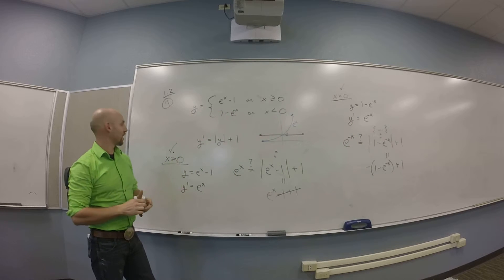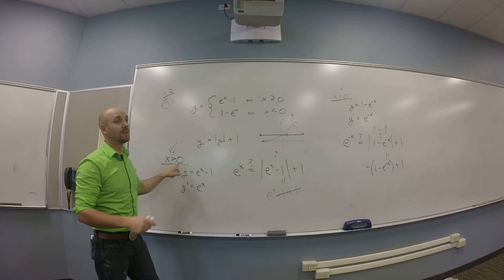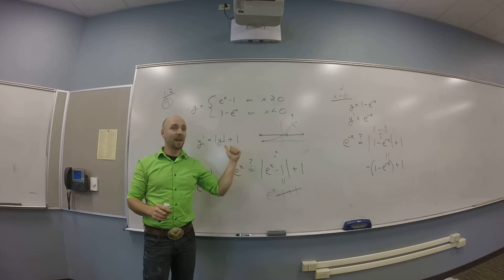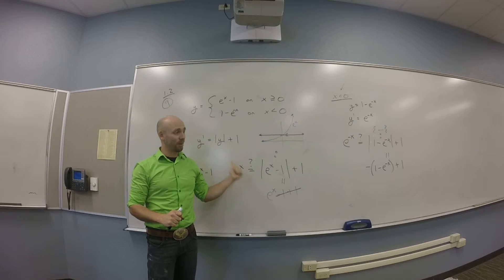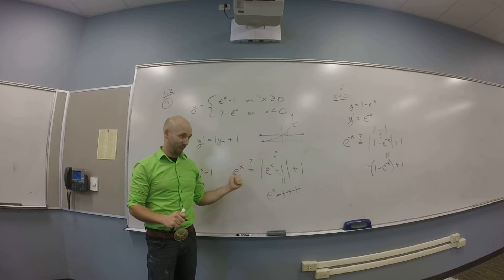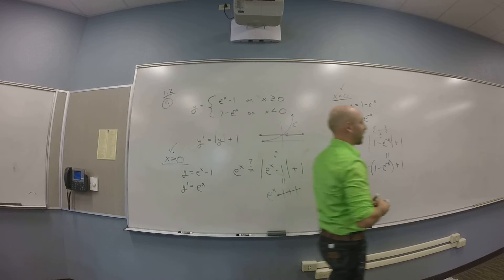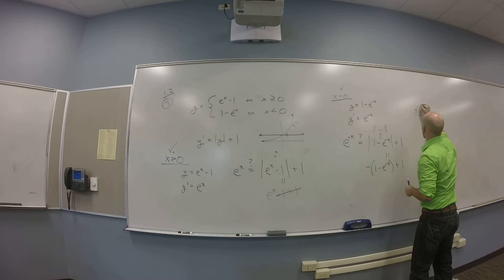So I've established that this function solves the DE for x strictly bigger than zero, and it solves for x strictly smaller than zero. But now I have some weirdness going on at zero — I need to know about the derivative at zero.